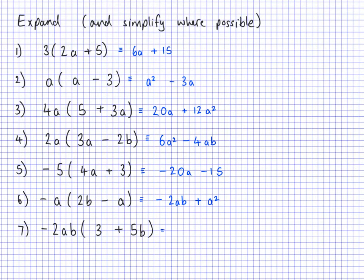And the last one: negative 2ab multiplied by 3 is negative 6ab. Then negative 2ab multiplied by positive 5b — that gives a negative answer. 2 times 5 is 10, and ab times b is ab squared. So it's going to be negative 10ab squared.